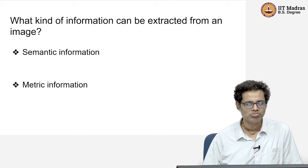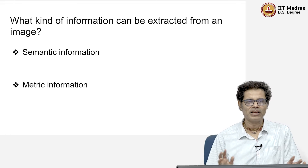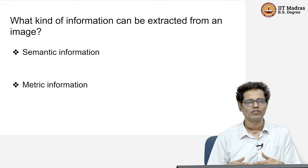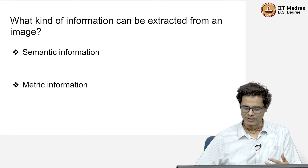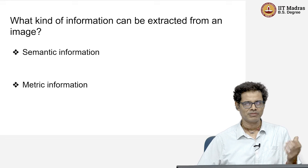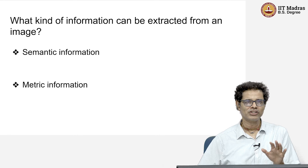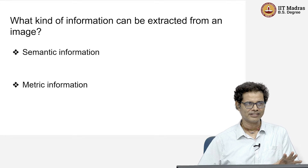Given an image or video, we can generally extract two kinds of information. One is semantic information, and the other is metric information. Metric means measurement; semantics means more like grammar — objects and all. We are generally interested in either or both of these.